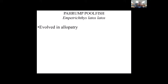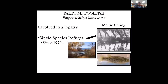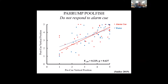We'll first talk about the Pahrump poolfish. The Pahrump poolfish evolved in allopatry in the Manse Spring. Since then they have been in single-species refuges since the 1970s and have experienced multiple population extirpations due to invasive species. The Pahrump poolfish in this graph were shown to not respond to alarm cue. On the x-axis you can see the pre-cue vertical position, and the y-axis is the post-cue vertical position. Red indicates alarm cue and blue indicates water treatment or control. There was no difference between either of these, so we know that the Pahrump poolfish does not respond to alarm cue.